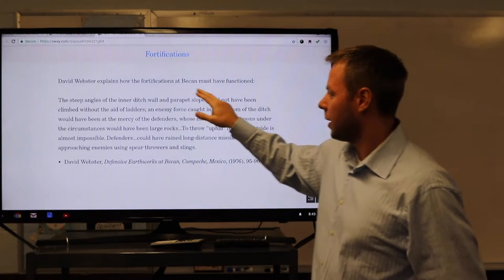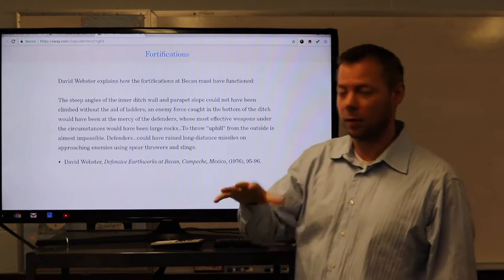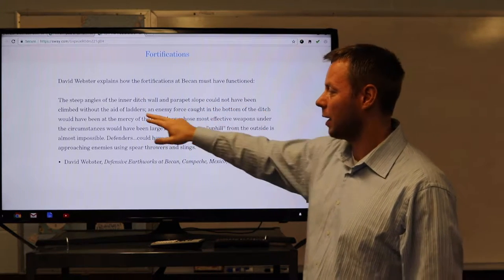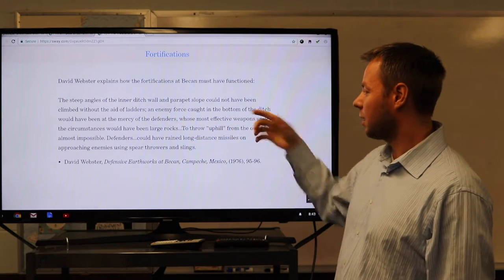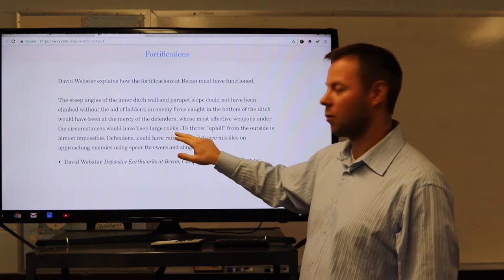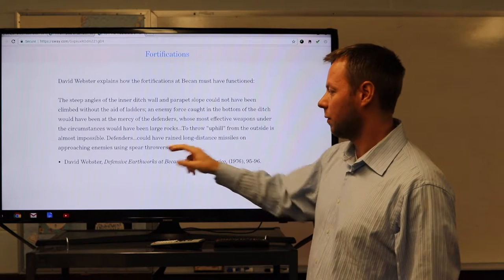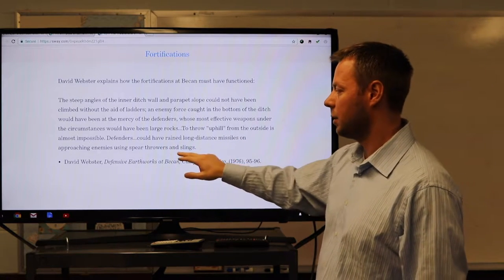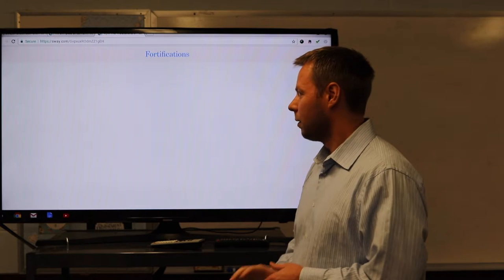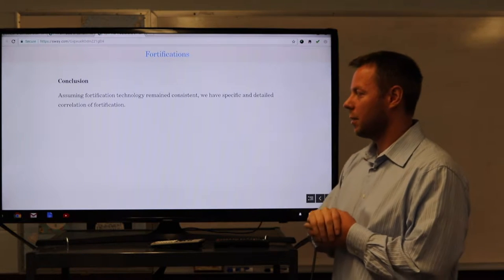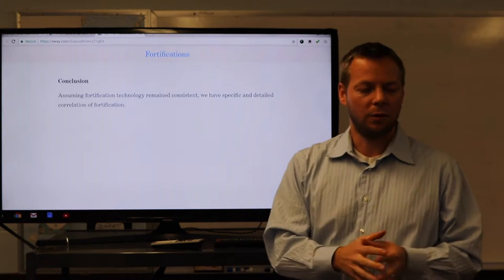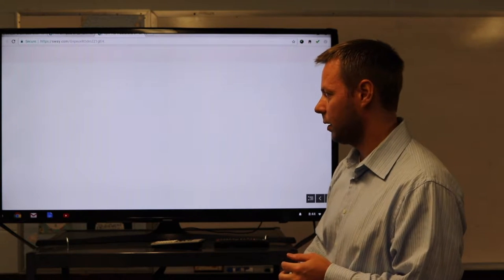David Webster explains how the fortifications of Becan must have functioned. Again, compared to what we read in the Book of Mormon, the steep angles of the inner ditch wall and parapet slope could not have been climbed without the aid of ladders, right? They couldn't get up. An enemy force caught at the bottom of the ditch would have been at the mercy of the defenders, whose most effective weapons under the circumstances would have been large rocks. To throw uphill from the outside is almost impossible. Defenders could have rained long-distance missiles on approaching enemies using spear throwers and slings, right? So, conclusion. Assuming fortification technology remains consistent, we have specific and detailed correlation with the fortifications that we read about in the Book of Mormon and those found in the right place, at least in Mesoamerica.